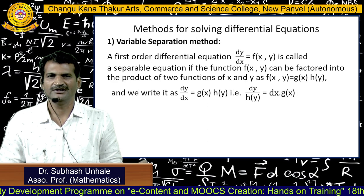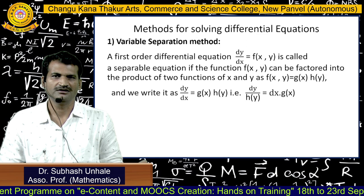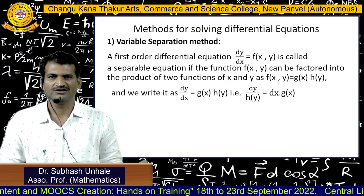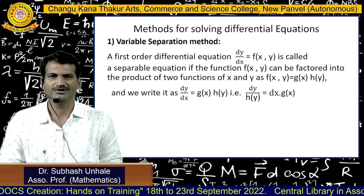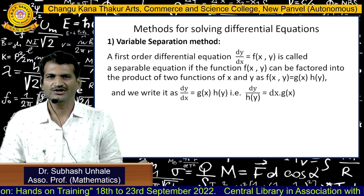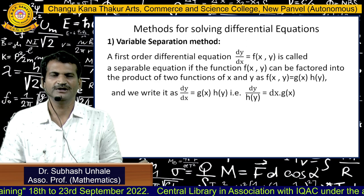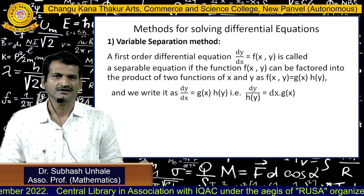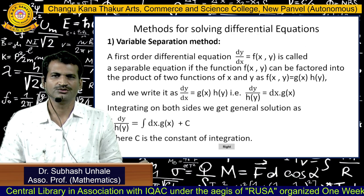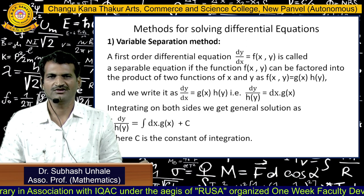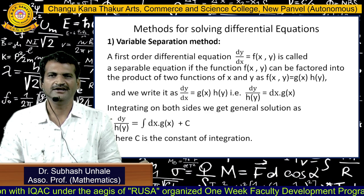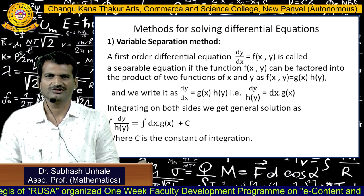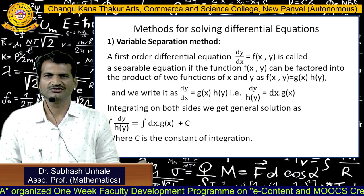The first method is the variable separation method. A first-order differential equation dy/dx = f(x, y) is called separable if f(x, y) can be factored into a product of two functions: f(x, y) = g(x)·h(y). We rewrite it as dy/h(y) = g(x)·dx, which is in separable form, and integrating both sides gives the general solution, where c is the constant of integration.